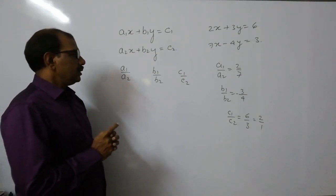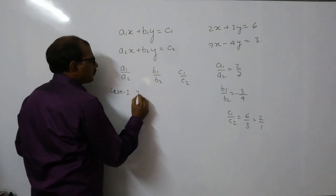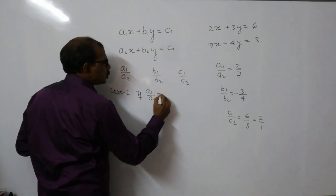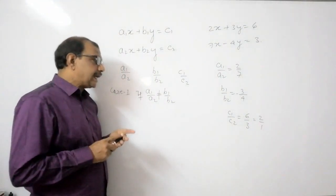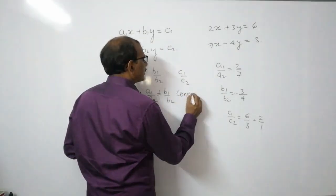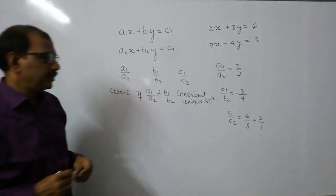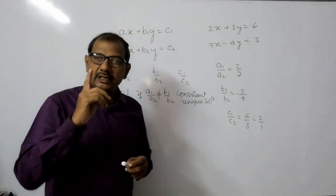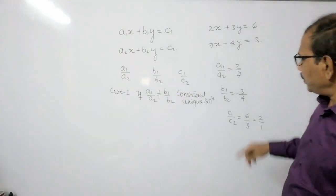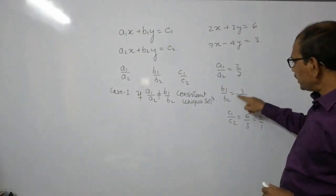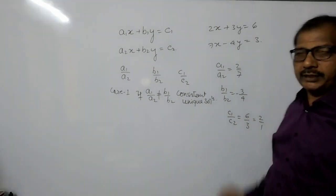Case 1: if a1/a2 is not equal to b1/b2, then the equations are consistent and have a unique solution. Here a1/a2 is 2/7 and b1/b2 is minus 3/4 — they are not equal, so solving these equations will give a unique solution, and the graph will intersect at one point.